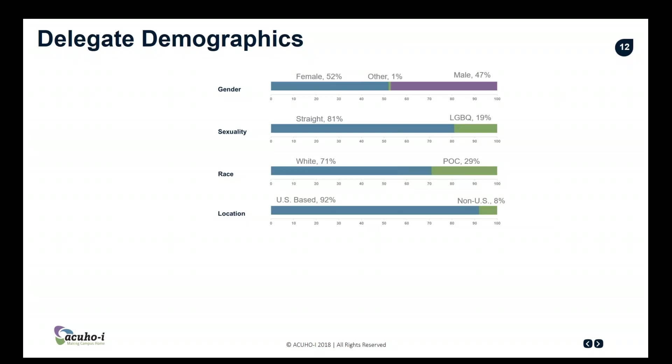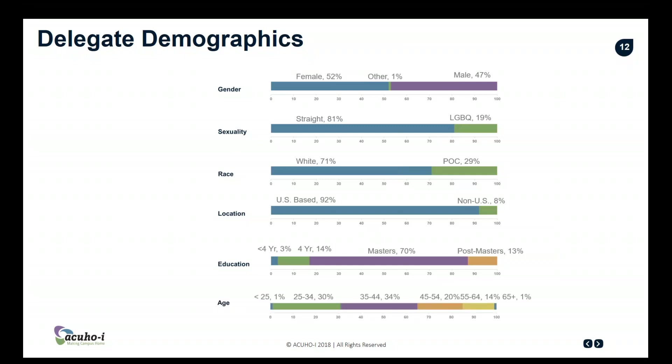For race: 71% identified as white, and 29% identified as a person of color. For location: 92% were U.S.-based and 8% non-U.S. For education level: less than a four-year degree is 3%; a bachelor's degree is 14%; a master's degree is 70%; and post-master's is 13%. It's kind of interesting to look at.